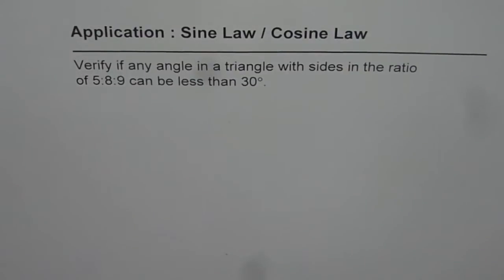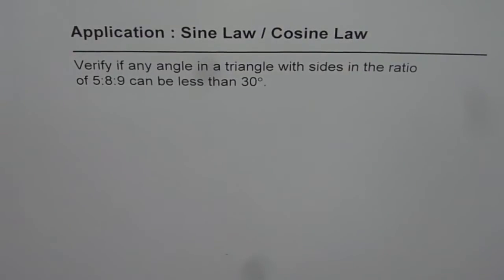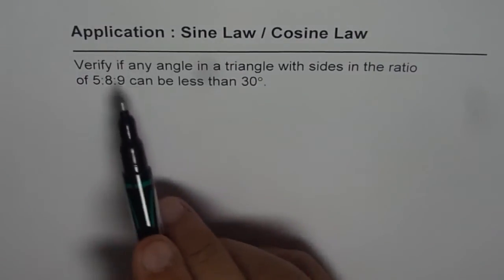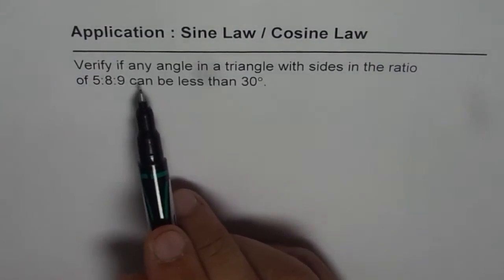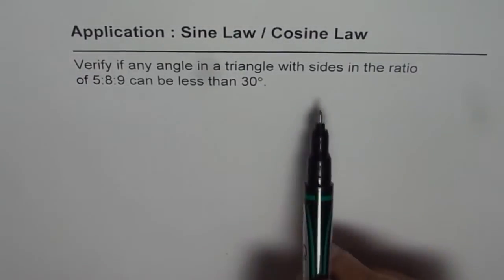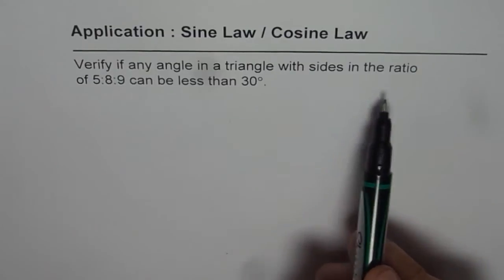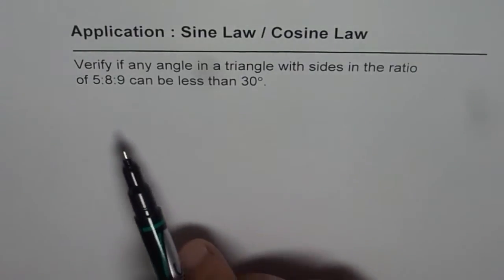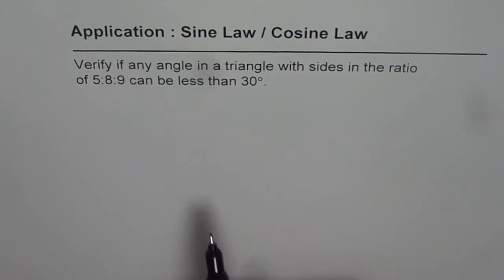Let us explore Sine Law and Cosine Law. Here is an application problem. It says: verify if any angle in a triangle with sides in the ratio of 5 is to 8 is to 9 can be less than 30 degrees.